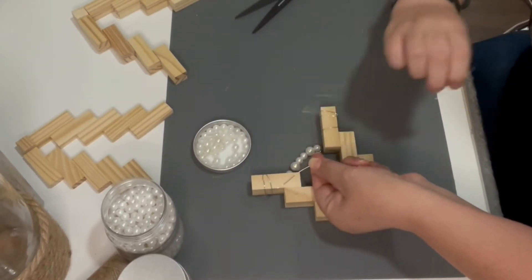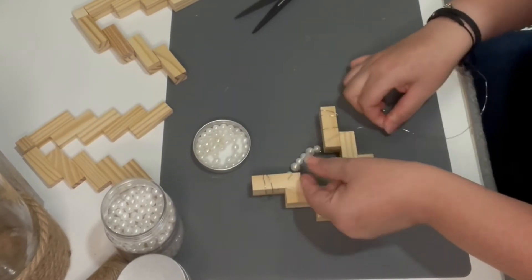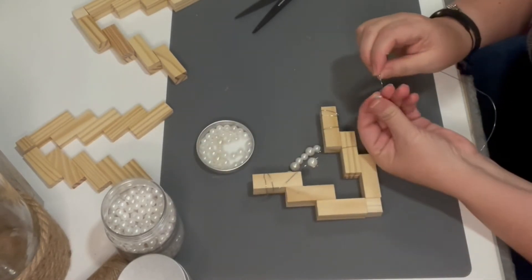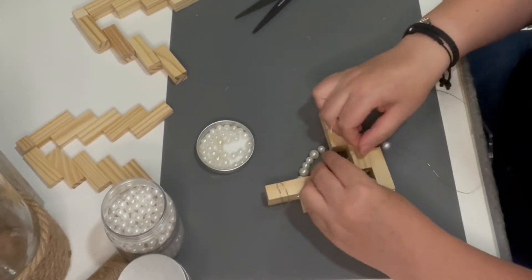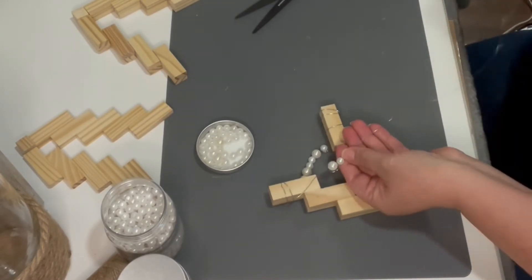Note here how I'm threading the wire through that pearl. It's because I want to lock it in place. Then I'm going to go ahead and add several more beads and then thread the last one and lock all those pearls in that one section in particular.